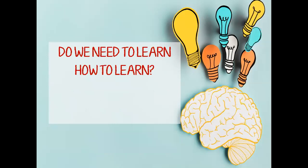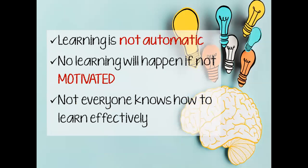Another question is, do we need to learn how to learn? Of course, the answer is yes. We all have the capacity to learn as a person or as an individual, but not all of us could learn effectively. Some people are very bookish, some are good in memorization, some are good in cramming. But we have to remember that learning is not automatic, so we really have to invest our time and effort. No learning will happen if a person is not motivated. Not everyone knows how to learn effectively. Effective learning only happens when you are an active learner — not only with your eyes or reading alone, but you have to listen and understand a certain material before you can learn.